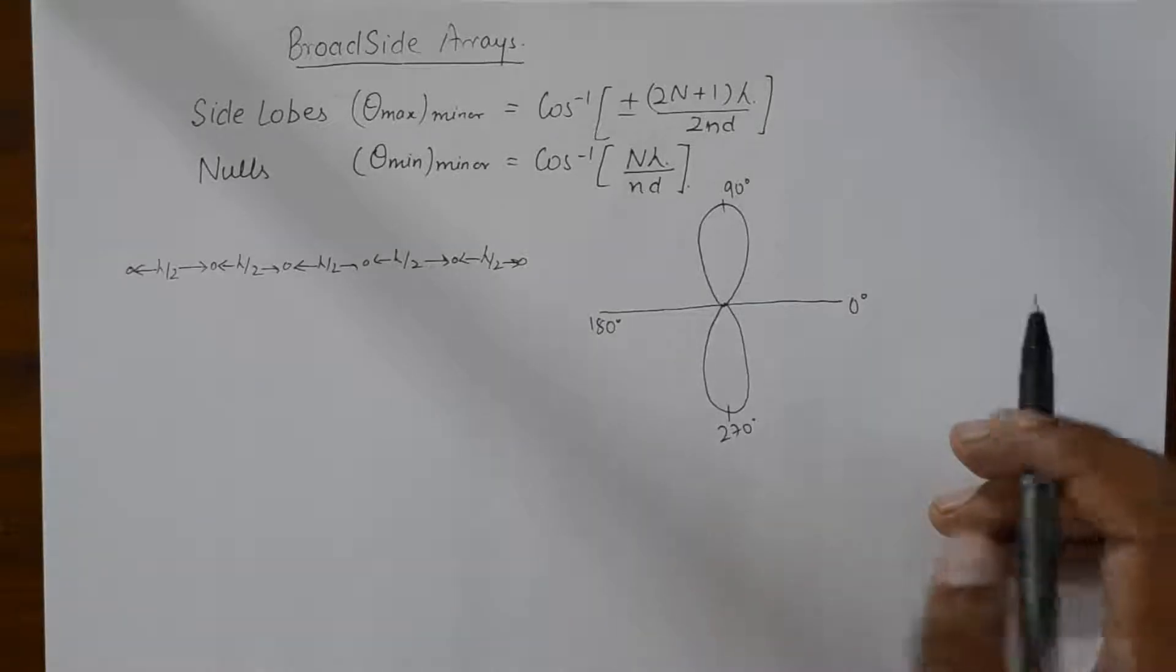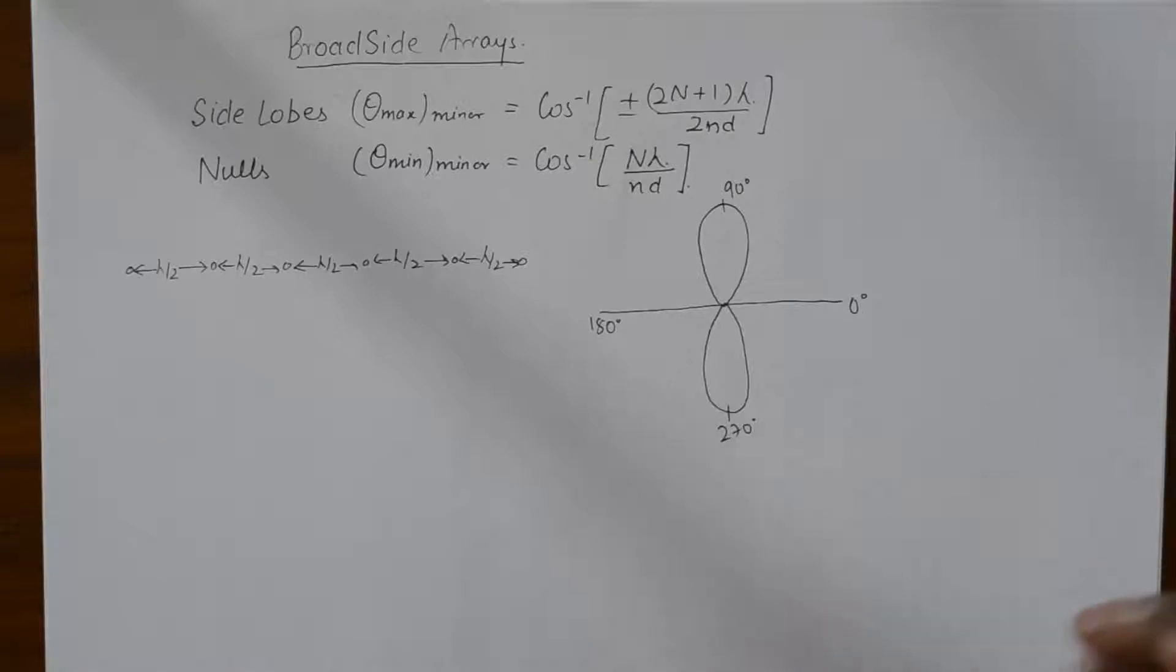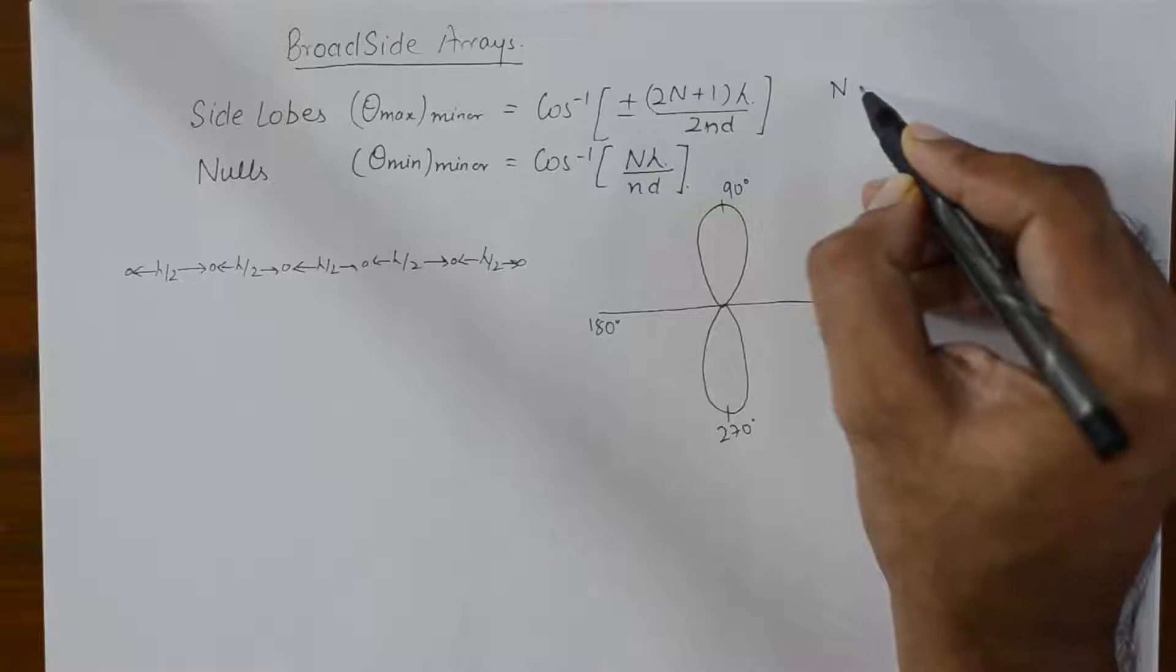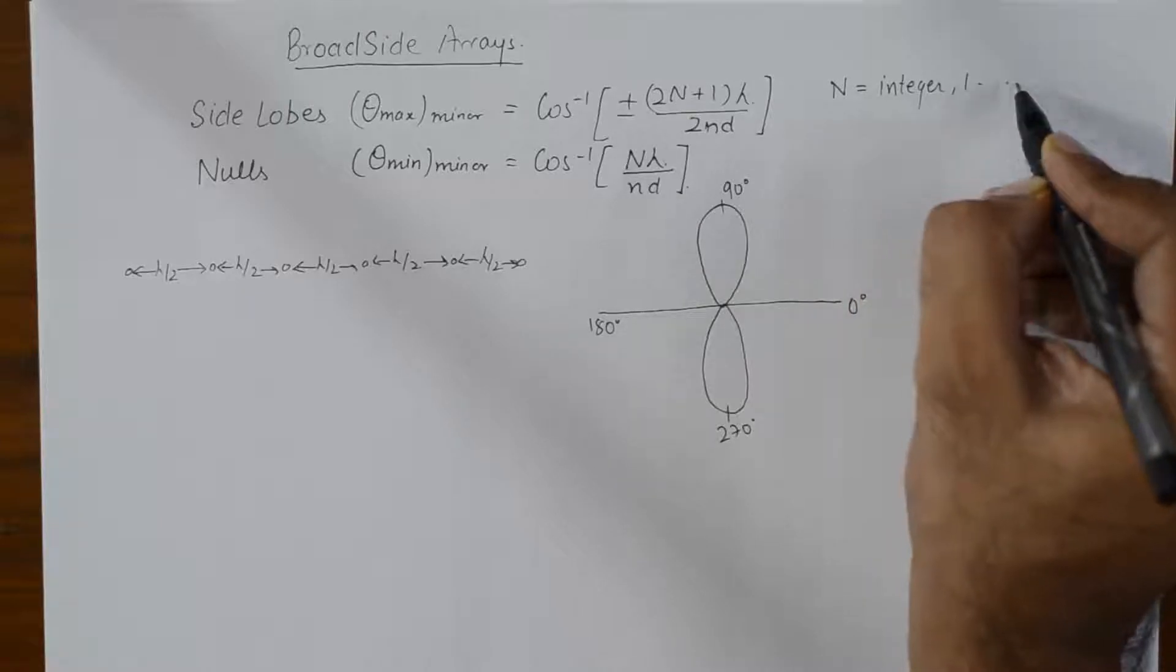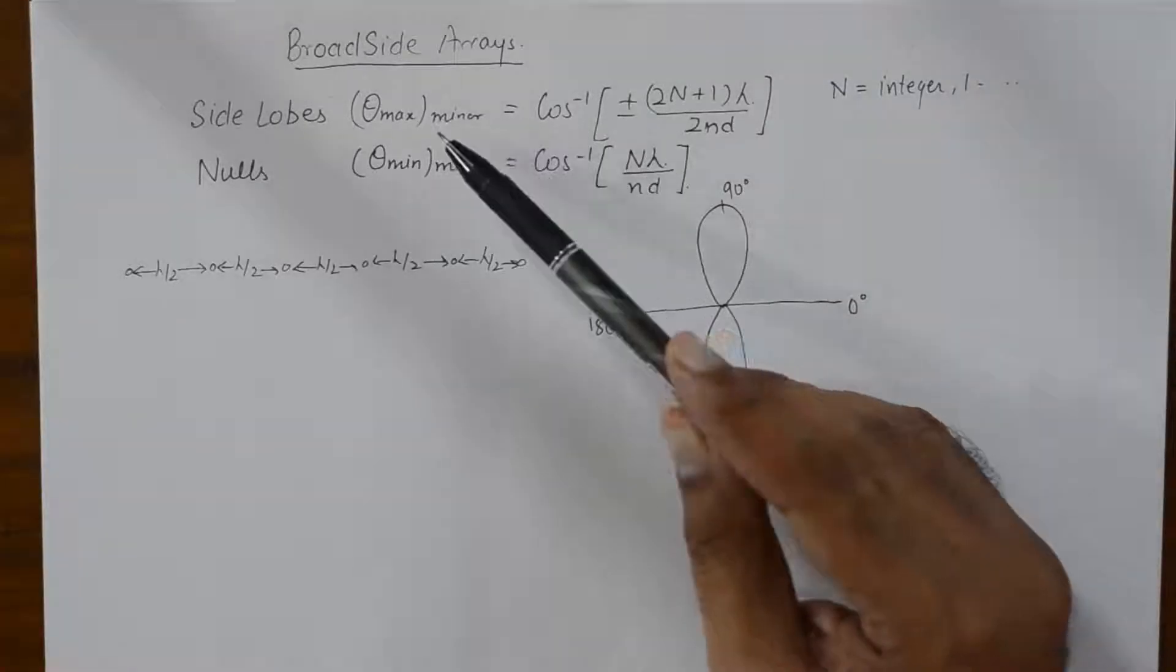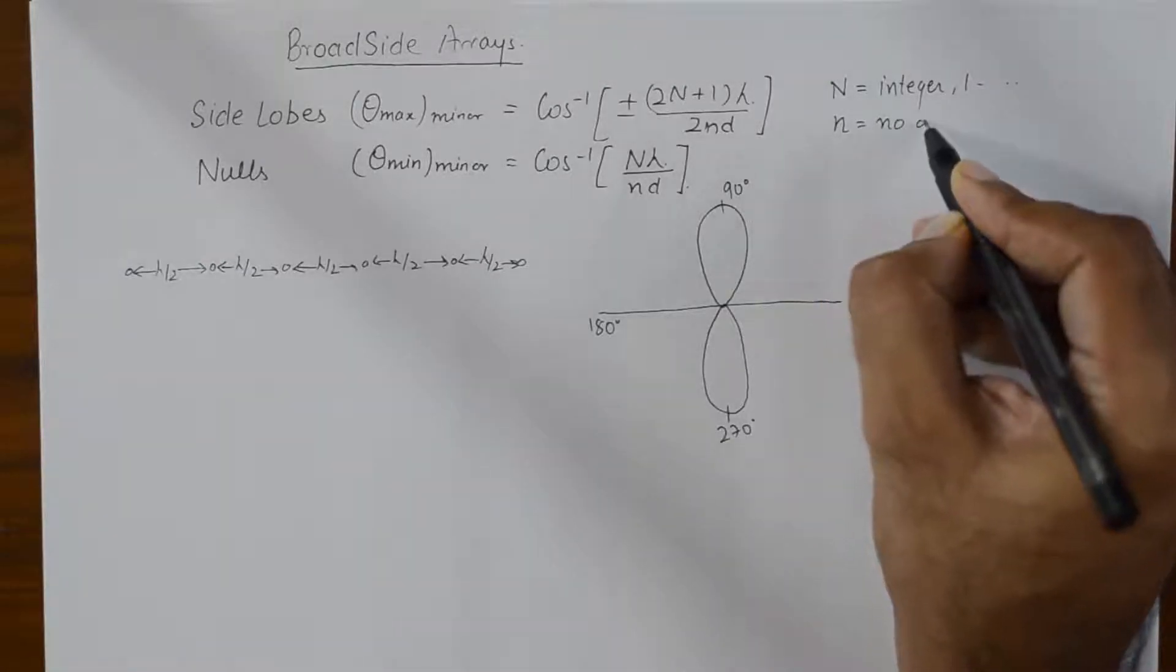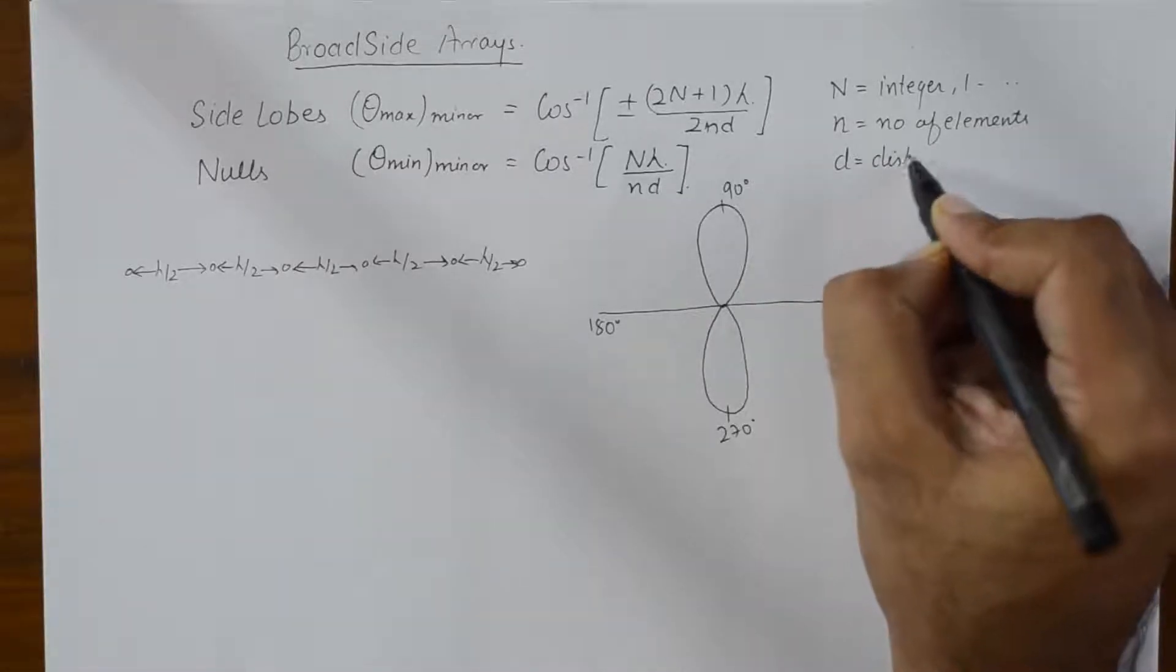And there is a formula to calculate the side lobes and nulls for the broadside array. I have written down the formulas here, by the way, and you could note this down. In this formula, capital N is going to be an integer that will start from 1 and will test all the integers up to the value where cos inverse has valid angles coming up, and small n is number of elements, d is the distance between the elements.